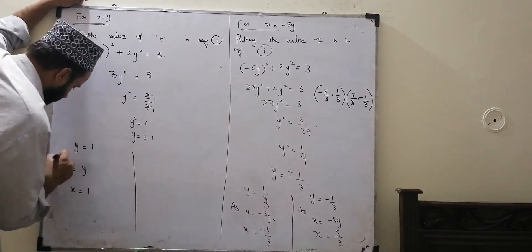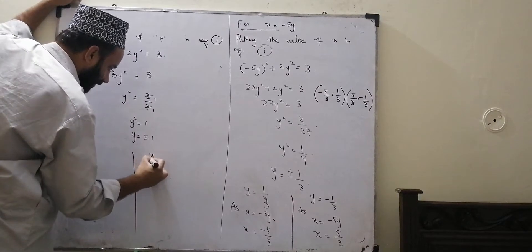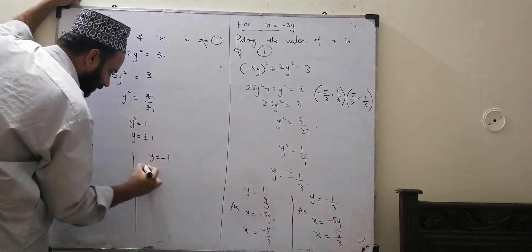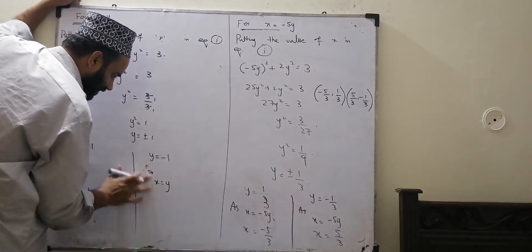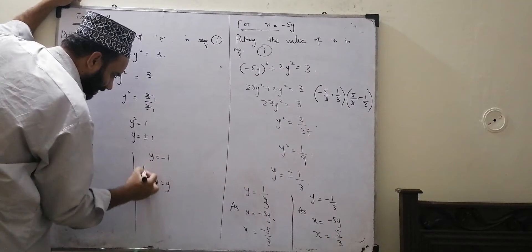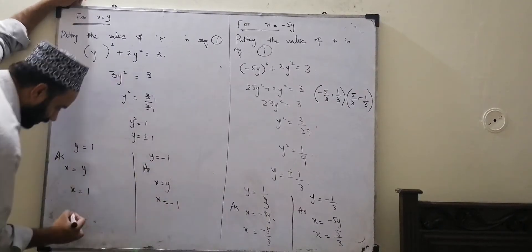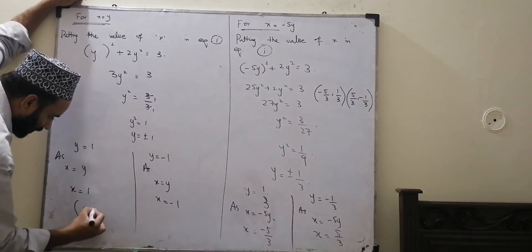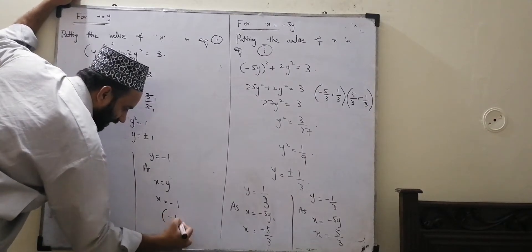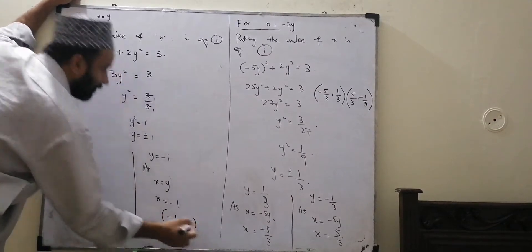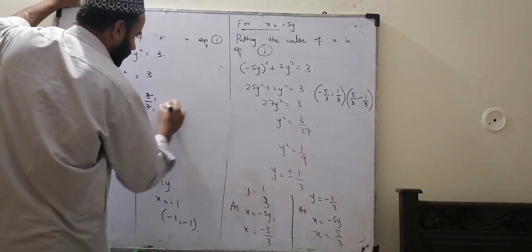Since y squared equals 1, y is equal to plus or minus 1. And since x is equal to y, x squared is also equal to 1, so x is equal to plus or minus 1 as well. So the ordered pairs from this case are 1,1 and minus 1, minus 1. We have four answers in total.